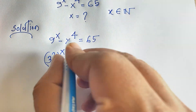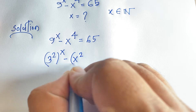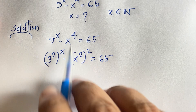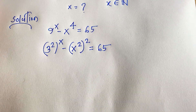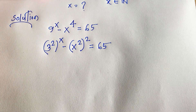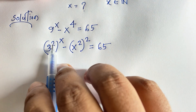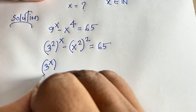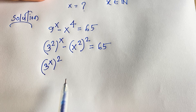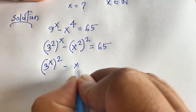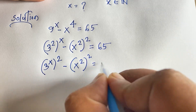So 3 squared whole to the power x, minus x to the power 4, which is x squared whole to the power 2, equals 65 — since 2 times 2 is 4. Applying exponential rules — (a^n)^m equals a^(nm) — this becomes (3^x)² minus (x²)² equals 65.